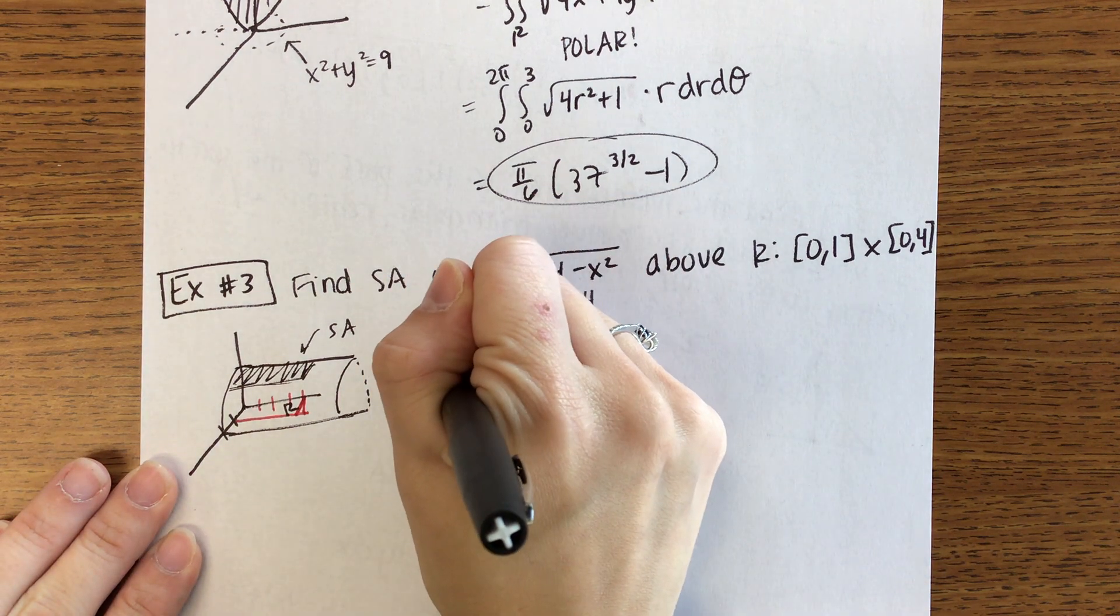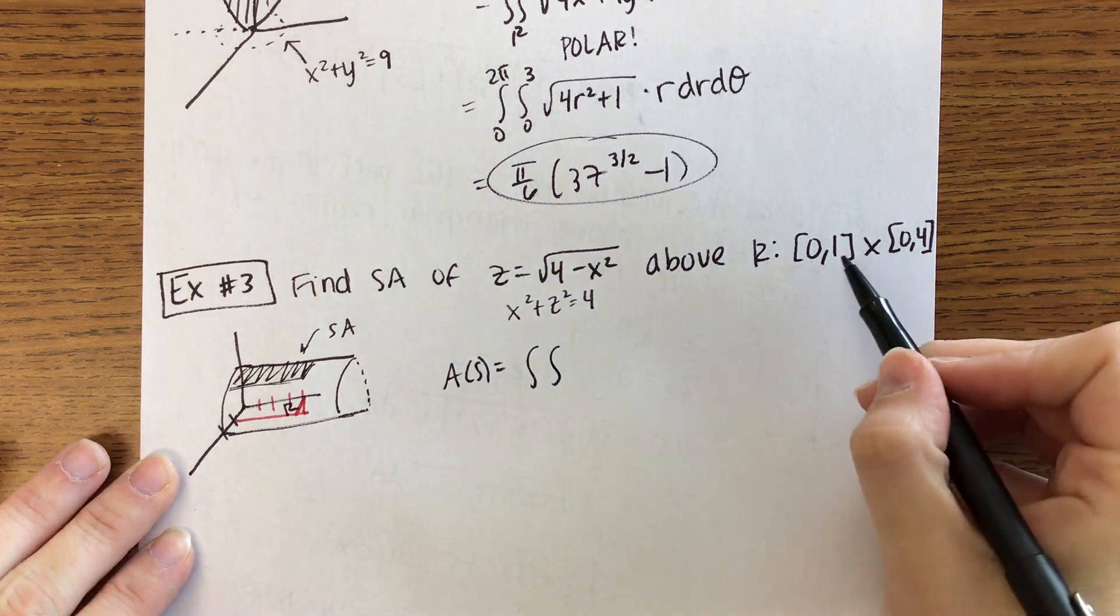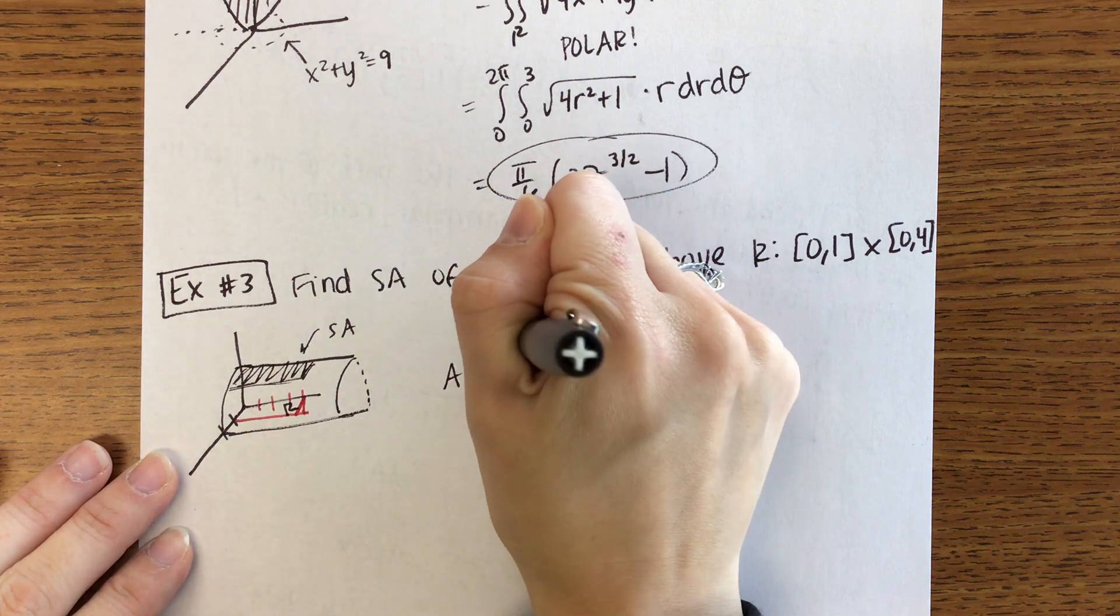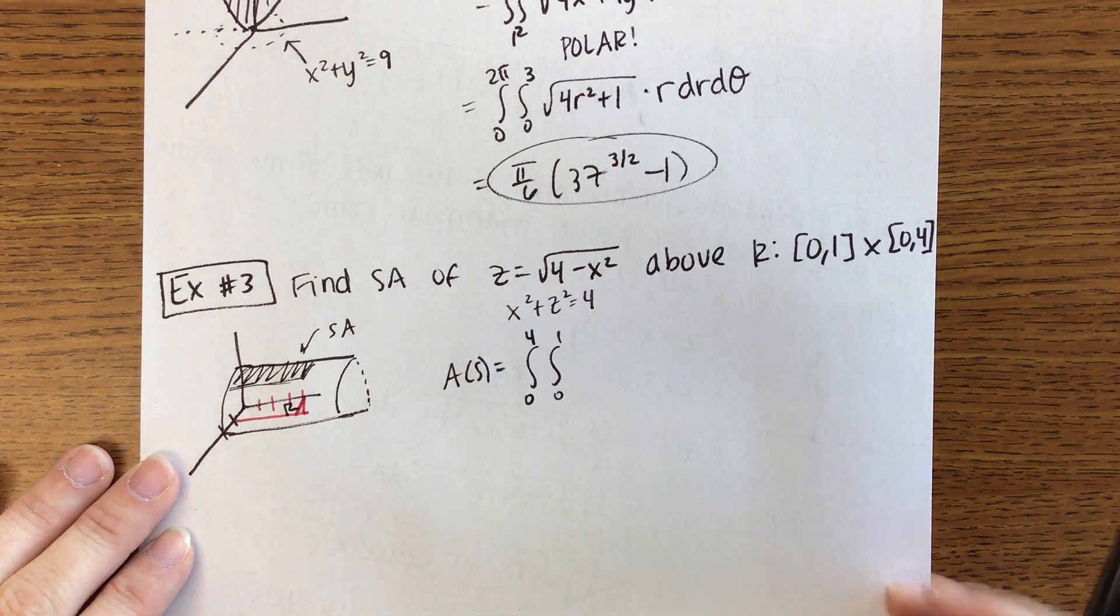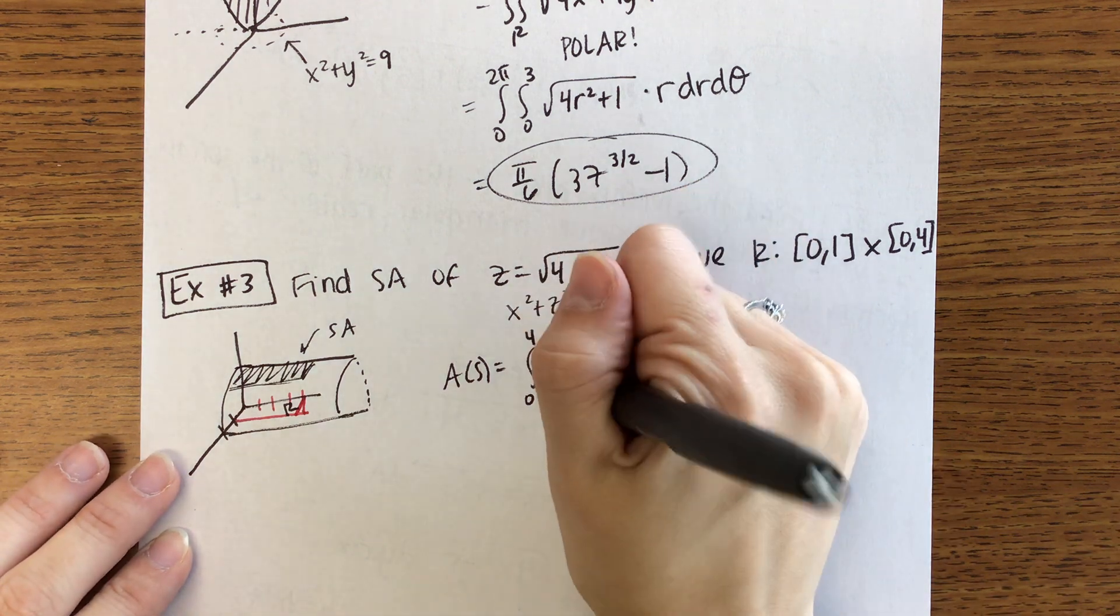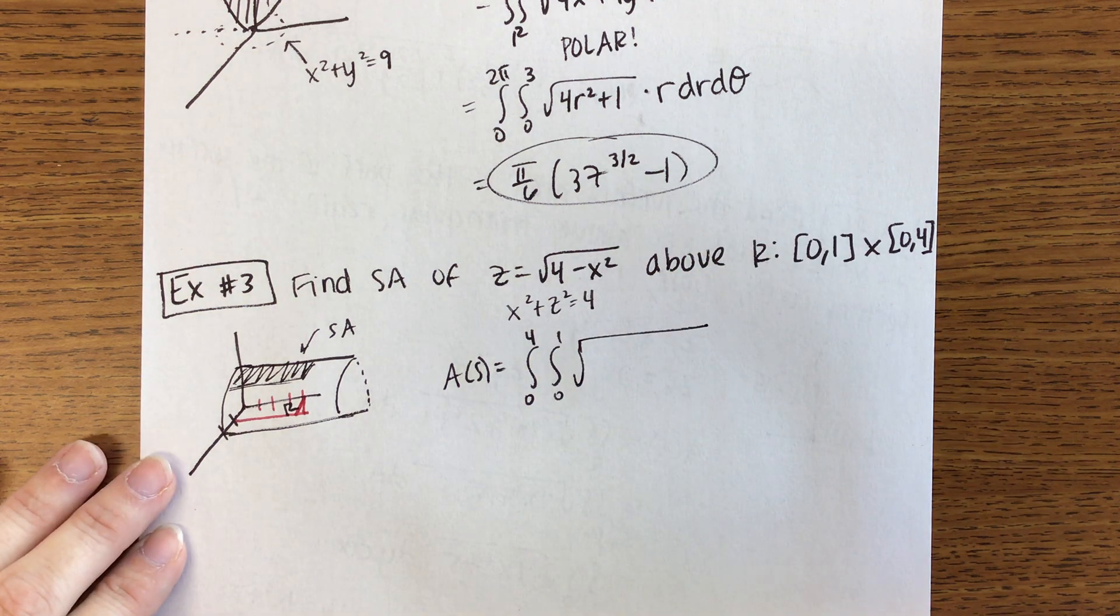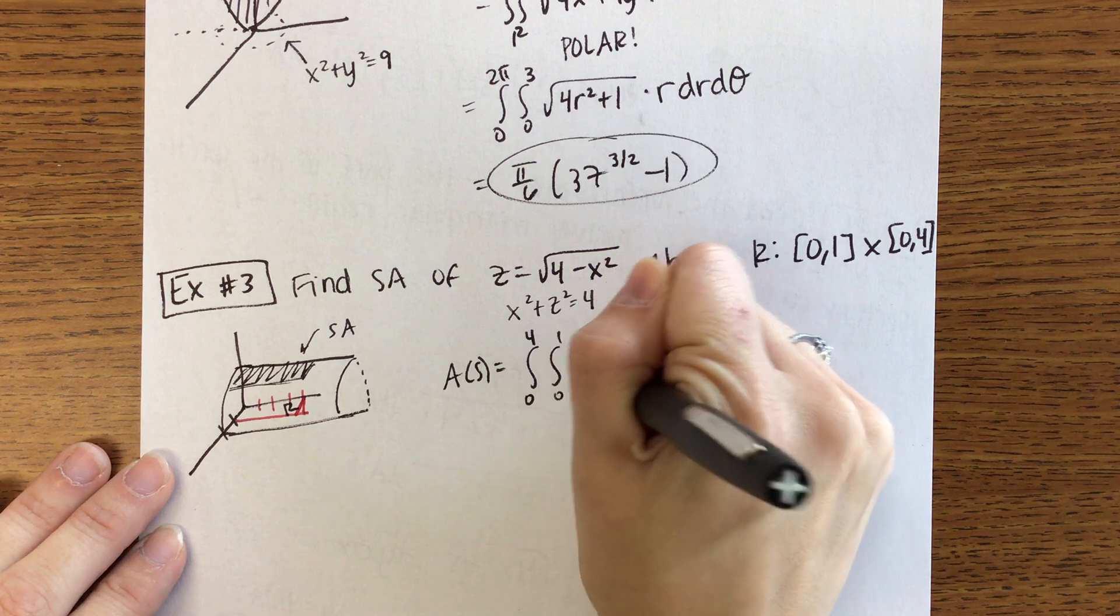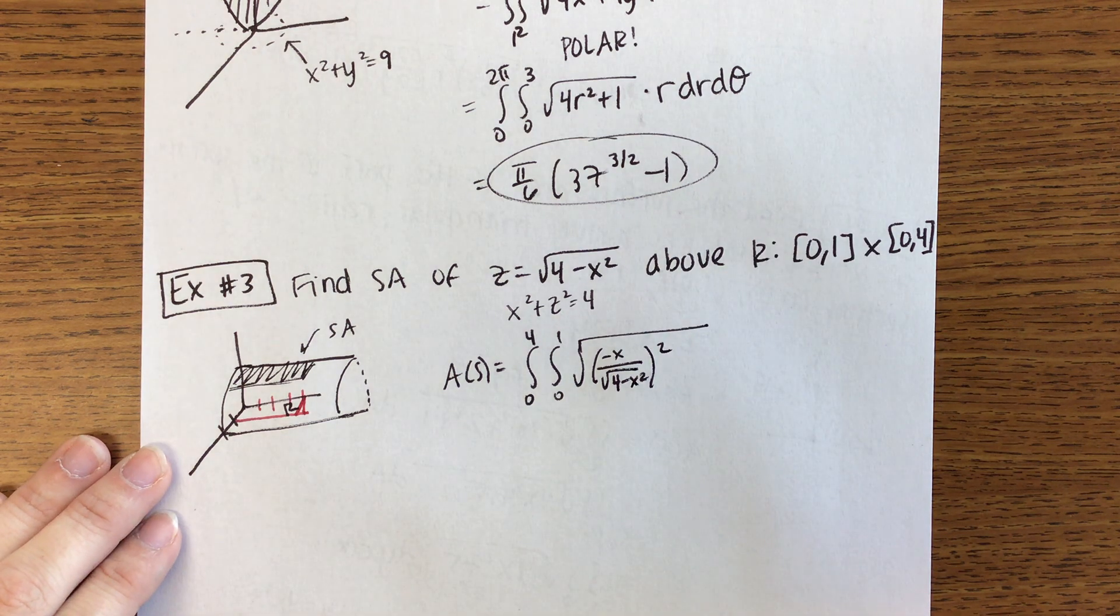So our surface area then. Bounds are easy in this case, we're already told what the bounds are. X is 0 to 1, Y is 0 to 4. I don't know if it matters either way. Okay so then we have the first partial with respect to X which will be negative X over the square root of 4 minus X squared, all of that squared. Partial with respect to Y will be 0 and then we have plus 1.